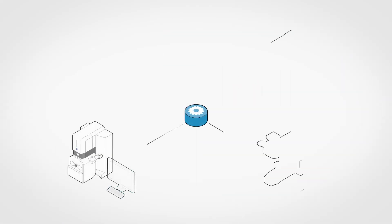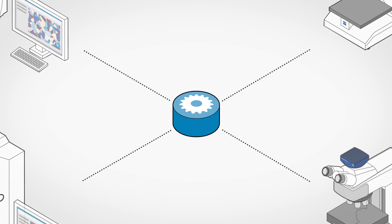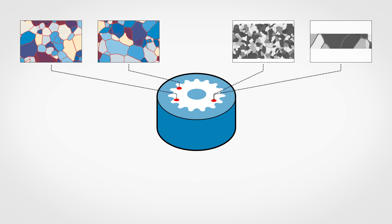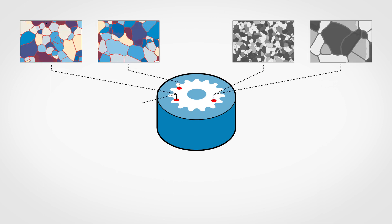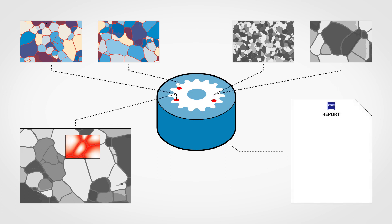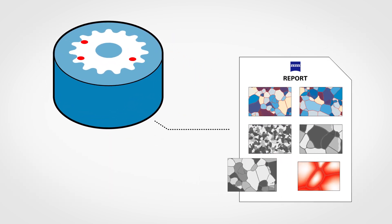ZenConnect is your solution, keeping all data from multiple sources together. Different regions of interest of the sample, smaller and larger details, the results of different analysis methods — all connected in correlative overlays. Reporting across the entire sample becomes easy, giving you all the information you need.